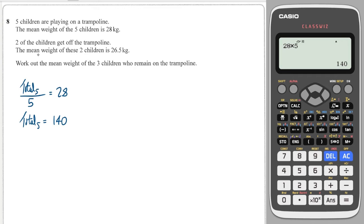Two of the children get off the trampoline, and the mean weight of these two is 26.5. So that means the total of these two divided by two was equal to 26.5. So doing 26.5 times two gives us 53. So the total of those two was 53.